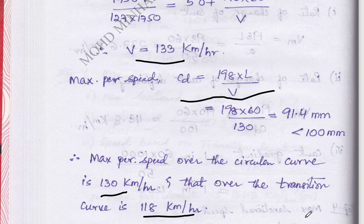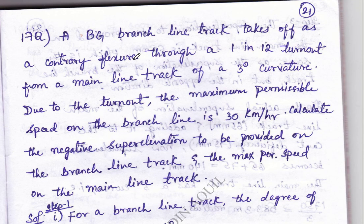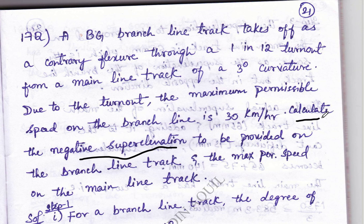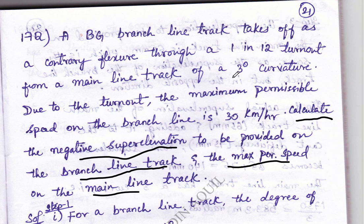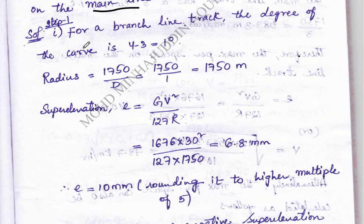The next problem requires us to calculate the negative super elevation to be provided on the branch line, and also to calculate the maximum permissible speed on the main line. The given values include the degree of curvature, slope, and a maximum permissible speed on the branch line of 30 km/h.